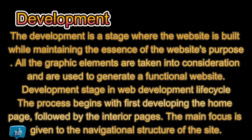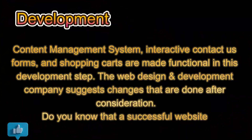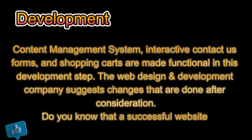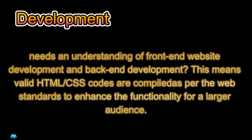Stage five is development, where the website is built while maintaining the essence of the website's purpose. All graphic elements are taken into consideration and used to generate a functional website. The process begins with developing the home page followed by the interior pages, with main focus given to the navigational structure. Content management systems, interactive contact forms, and shopping carts are made functional in this step. A successful website requires an understanding of both front-end and back-end development, with valid HTML and CSS codes compiled to web standards to enhance functionality for a larger audience.